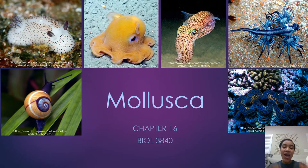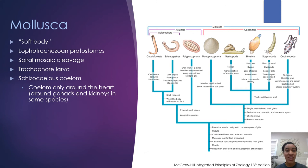Hello everyone and welcome to the lecture covering chapter 16 in your book: Mollusks! Arguably one of the coolest phyla of life on this planet. So, Mollusca means soft body, and all organisms within this phyla have a soft body. They are Lophotrochozoan protostomes. They develop using spiral cleavage and they're mosaic. They have a trochophore larva, and they do have coeloms, so they are coelomates.